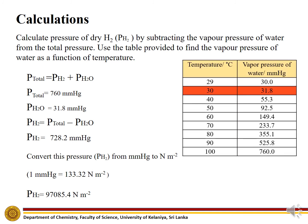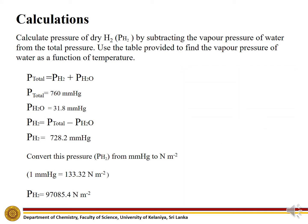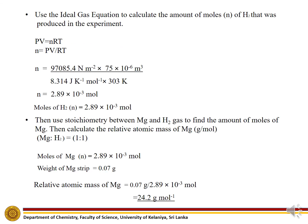We can use the provided table to find the vapor pressure of water as a function of temperature. After calculating the number of moles of hydrogen produced, we use stoichiometry between magnesium and hydrogen gas to find the moles of magnesium. Then we can calculate the relative atomic mass of magnesium as shown.